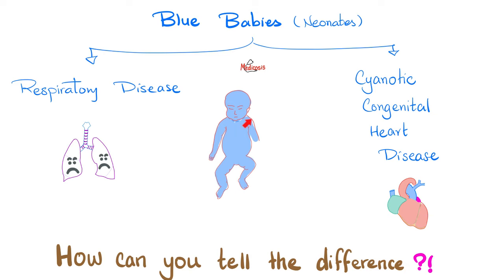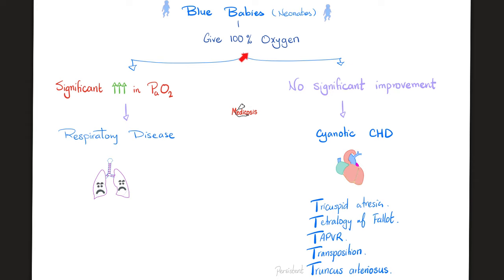This is cyanosis - a blue baby is born. What do you think is going on? It's either a lung disease or a heart disease. How can you tell the difference? Easy - give oxygen. If oxygen treats the problem, then it was a lung issue, because you're replacing the lung's function. But if there's no significant improvement, then it's a heart issue. Even if you give oxygen, the heart still has to pump it to all the tissues. When the heart cannot do it, that's the heart condition.